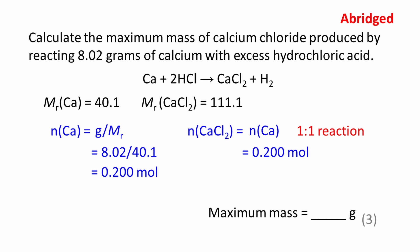The maximum amount of calcium chloride that can be produced is equal to the amount of calcium that reacts. This is called a one-to-one reaction. The maximum amount of calcium chloride that can be produced is 0.200 moles.